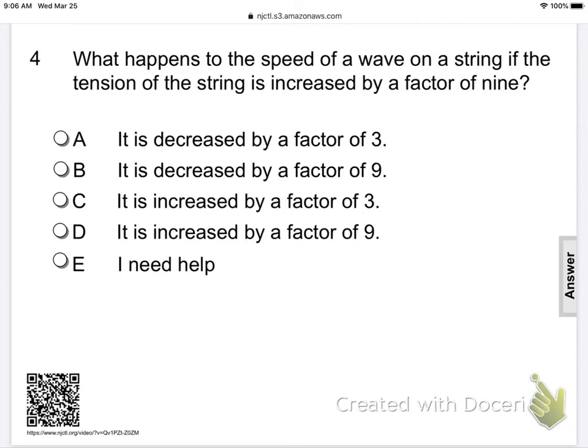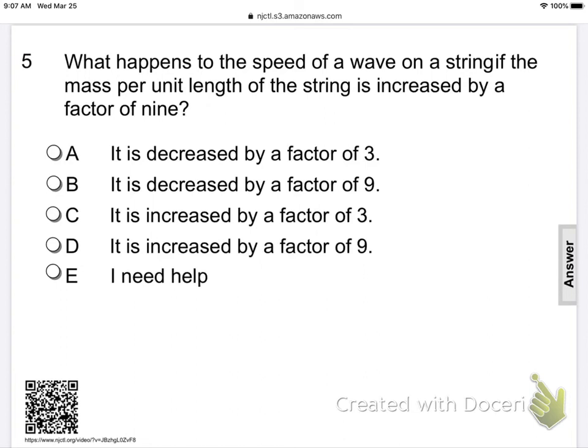What happens to the speed of a wave on a string if the tension of the string is increased by a factor of 9? We have velocity equals the square root of tension over mu. We're increasing the tension by a factor of 9. So velocity, the only thing that's changing, is a square root of 9. Since it's in the numerator, it has to be increased by square root of 9. So increased by a factor of 3.